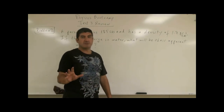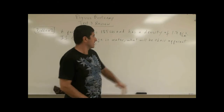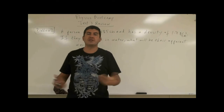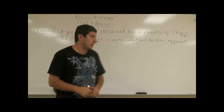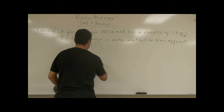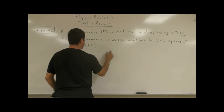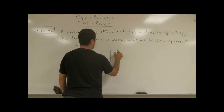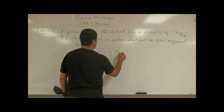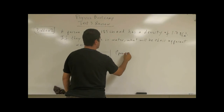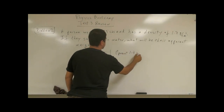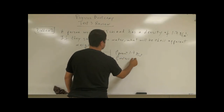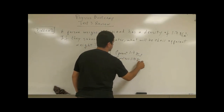Actually, in this problem it turns out you don't have to. The density of the person is 1.7 grams per cubic centimeter. We already know the density of water, which is 1.0 grams per cubic centimeter.